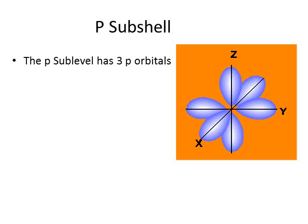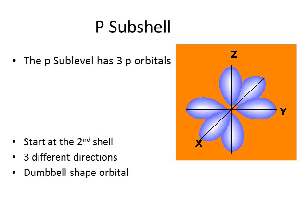The P subshell consists of three orbitals, arranged along the X, Y, and Z axis. They're shaped a little bit like a dumbbell, and again, they can hold up to two electrons. There are no P subshells in the first shell, they begin at the second shell.